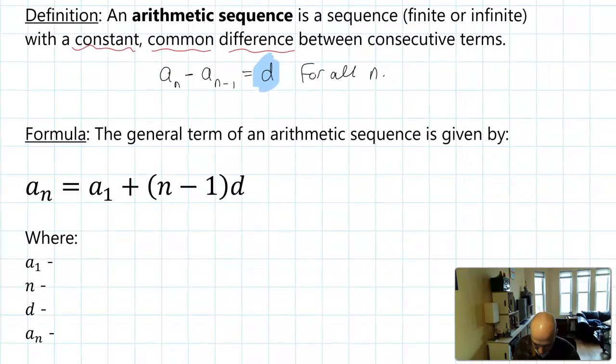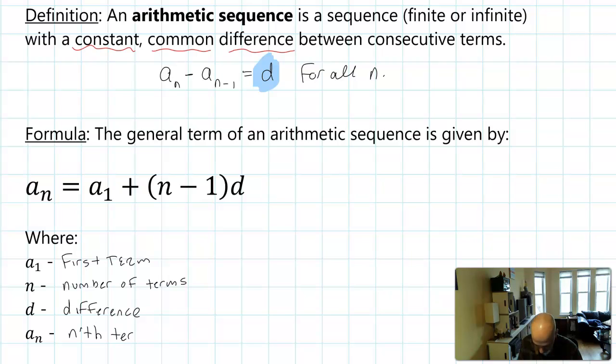Since it has that predictable pattern where the difference is always the same, the generalized term of an arithmetic sequence is given by this formula: a_n = a_1 + (n - 1)d. What do all these mean? Well, a_1 is the first term, n is the number of terms, d is the common difference, and a_n is the nth term you're trying to find. If you know the first term, the difference, and the number of terms, you can find any term you want. Problems will give you any three of those, and you find the fourth one. This is our generalized formula for an arithmetic sequence.